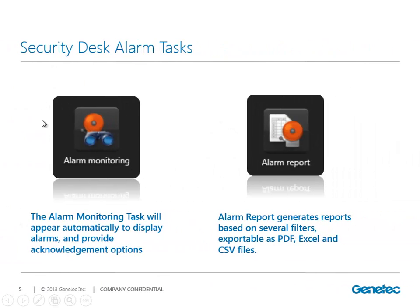We have an alarm monitoring task that will appear automatically when an alarm is triggered within the system. We can have different acknowledgement options within that task. We can also run and generate reports on the alarm reporting task. Those reports can be filtered depending on what kind of alarm or report we're looking for, and we can export them in PDF, Excel, and comma-delimited files.